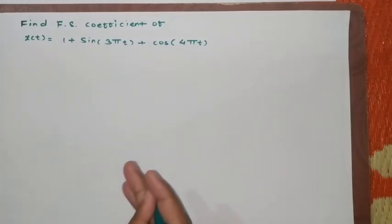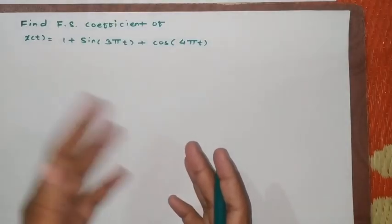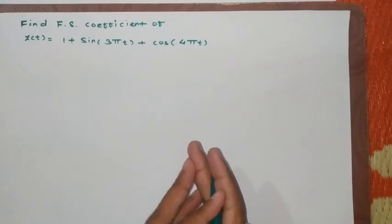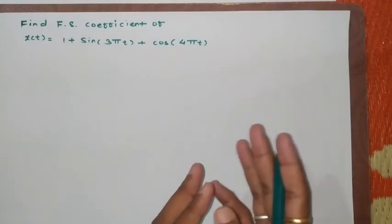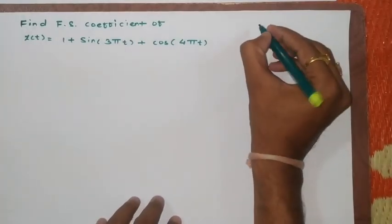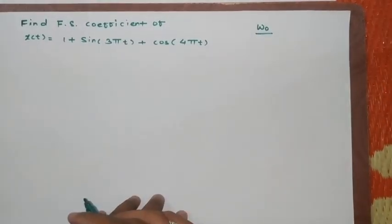As far as my previous video in which we have seen one example of the same case where we are finding Fourier series coefficients, the only difference in these two examples are in the previous case the frequency component omega naught was given in the example.